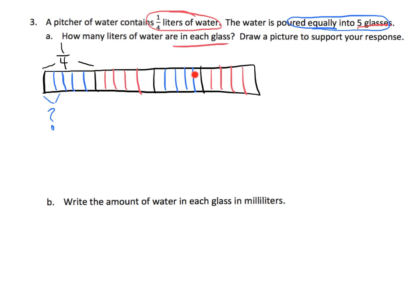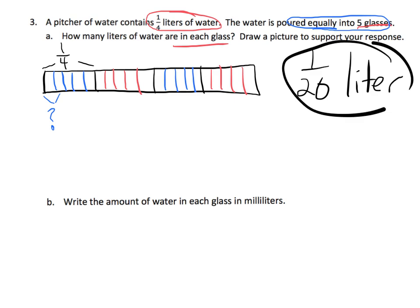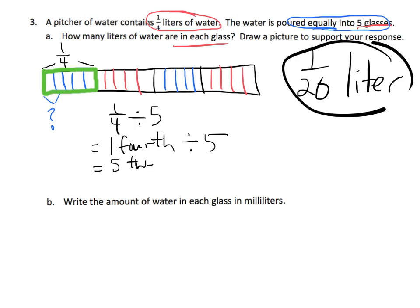We can do four times five is 20, so we know that this one little piece is one-twentieth of a liter. So that's our answer, and we did that without any math. But let's write out the math: one-quarter divided by five is the same thing as one-fourth divided by five. Instead of calling this one-fourth, we could call this five-twentieths. So five-twentieths divided by five — five divided by five is one — so the answer is one-twentieth.